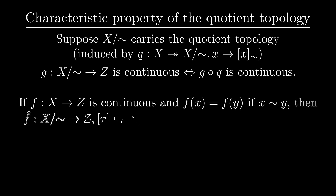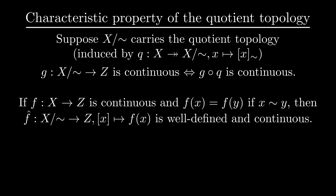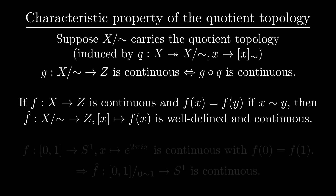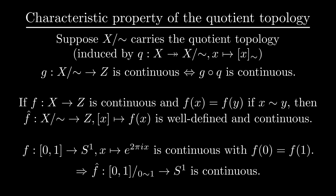This means that if we have a map on x which maps equivalent elements to the same point, we can define f on the equivalence classes, and this map is also continuous. For example, the exponential function on the unit interval traces out the unit circle. The value at 0 and 1 is the same, so the map factors into a continuous map from the quotient space where we identify 0 and 1.